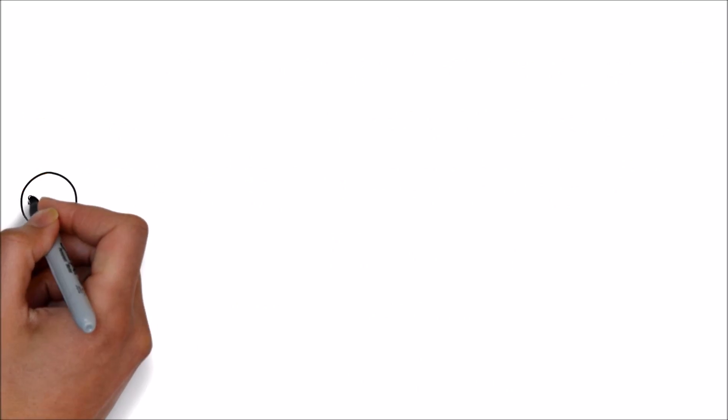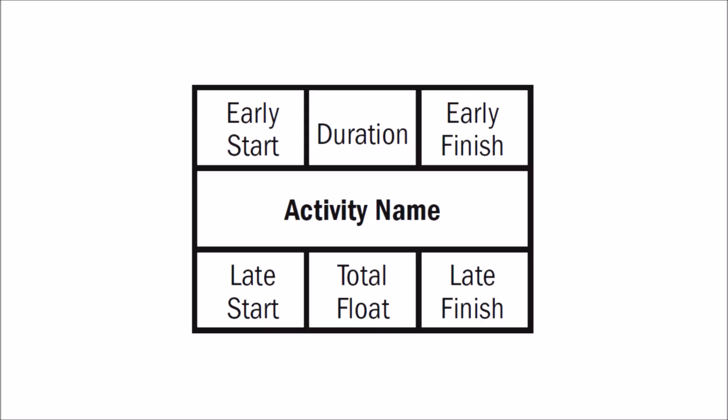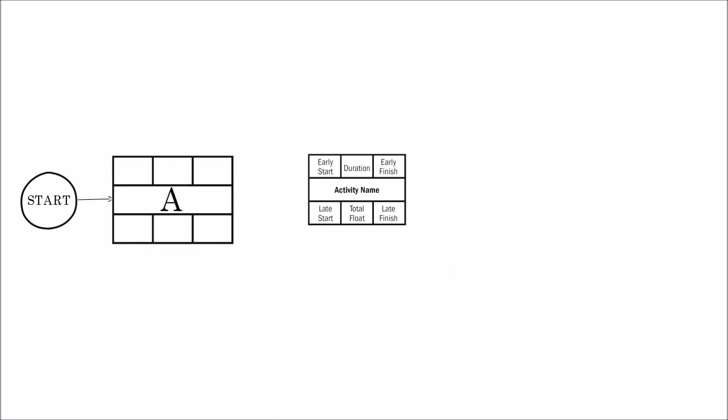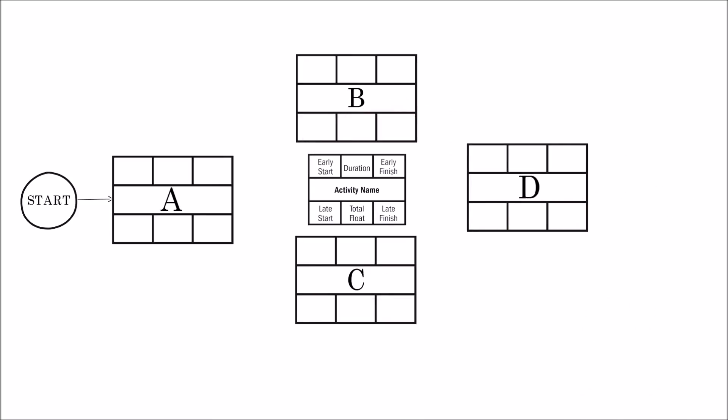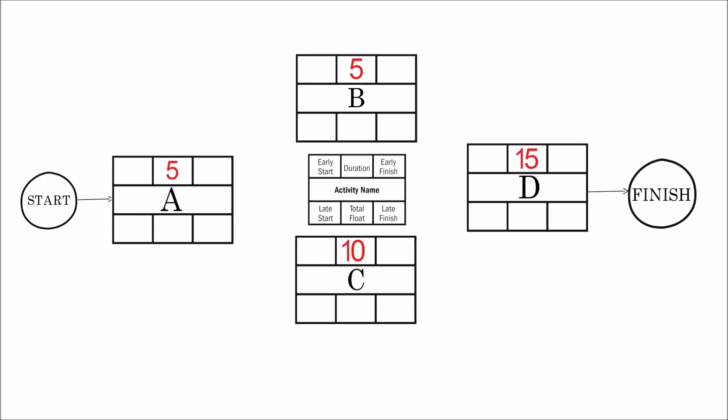Here is an example to better understand the critical path method. Before proceeding further with the example, let's recall the reference notation for activities in critical path method. In this method we have four activities A, B, C, D, having 5, 5, 10, and 15 days of durations respectively. While sequencing the activities we found both B and C can be carried out in parallel. Now let's find the critical path.